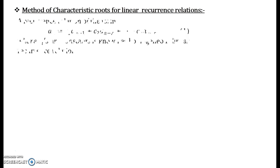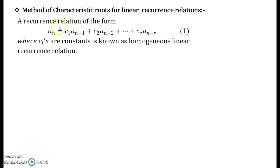So let us see, the first definition that is required is that a recurrence relation of the form a_n = c₁a_{n-1} + c₂a_{n-2} + ... + c_ra_{n-r} where c_i's are constants is known as a homogeneous linear recurrence relation. Now we have to solve such a linear recurrence relation.